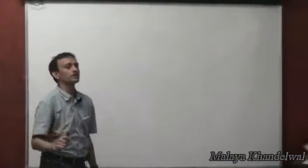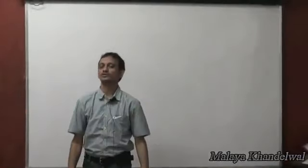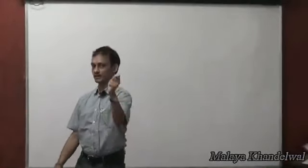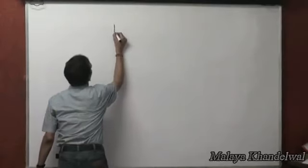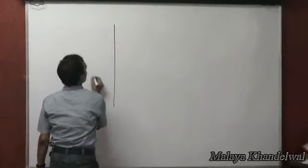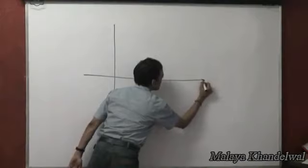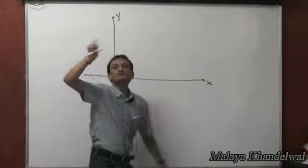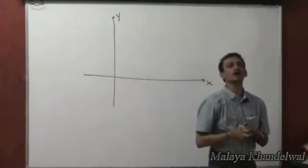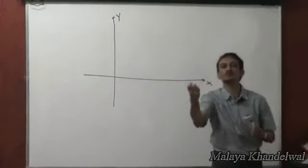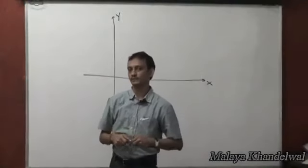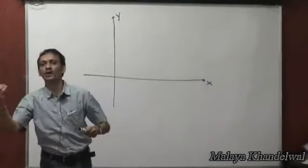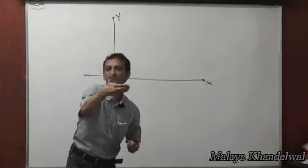We will look at trigonometric ratios in a very general manner. This is the Cartesian plane, the x-y plane, and different points on this plane are located by different ordered pairs x, y which locate different points in the plane.